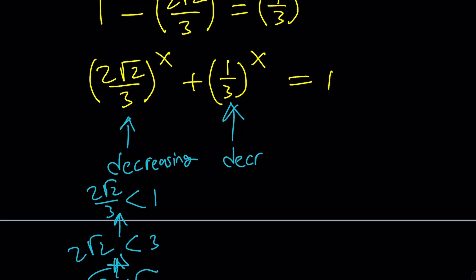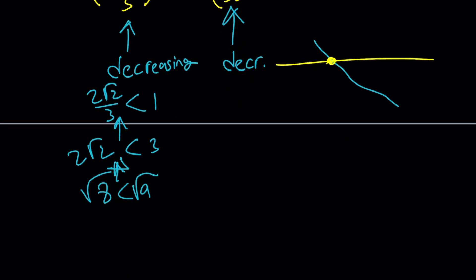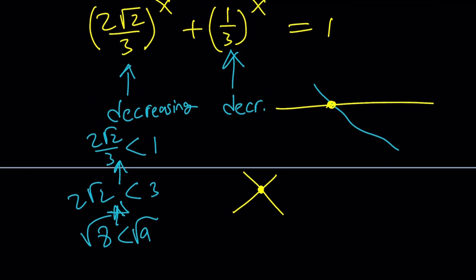The sum of two decreasing functions is also decreasing. A decreasing function intersected by a horizontal line can only happen at one point. The same idea applies between increasing and decreasing functions — they intersect at a single point, though you have to be careful about the intervals on which each is increasing or decreasing. So this means there's going to be a single solution.